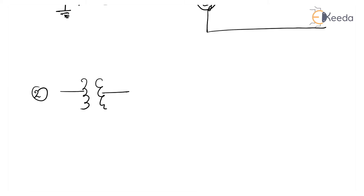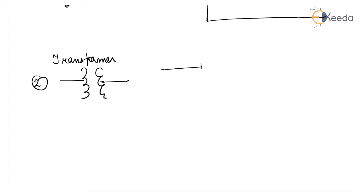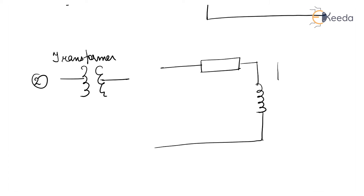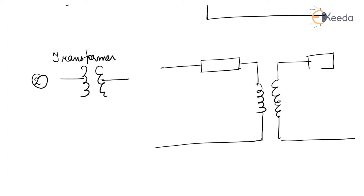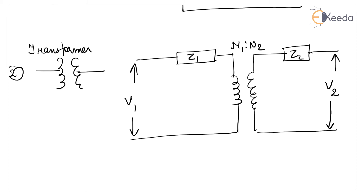The second component is the transformer. The representation of a transformer: Z1 is the impedance on the primary side, and Z2 is the impedance on the secondary side. V1 is the voltage on the primary side, V2 is the voltage on the secondary side. N1 to N2 is the turns ratio. This is the actual representation of a transformer. If we neglect the shunt branch, N1 to N2 is the number of turns, and here is the induced EMF.